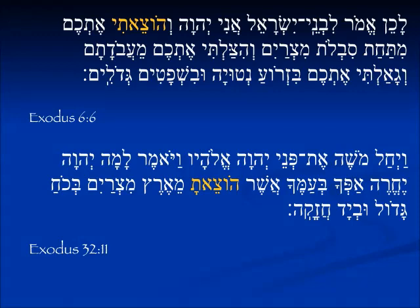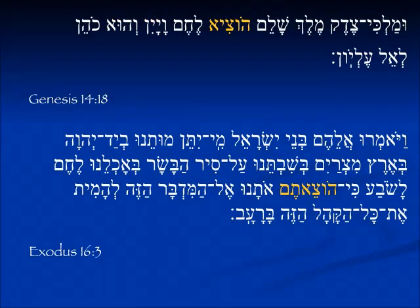Conjugated in the perfect but read in the future. For the second person masculine singular, in Exodus 32:11, Moses is talking to God about the people. He says, 'asher hotseta me'eretz mitzrayim,' which you brought out from the land of Egypt. Here we have the third person masculine singular — here is the yud infix — hotsi. In Genesis 14:18, talking about Melchizedek, 'melech shalem hotzi lechem v'yayin' — he brought out bread and wine.